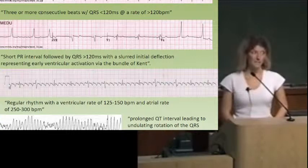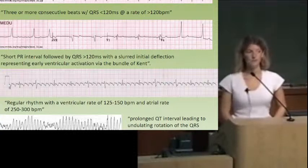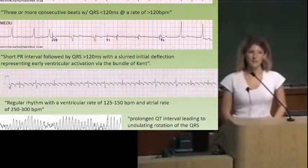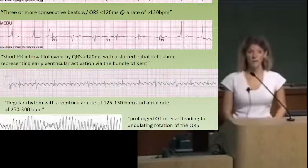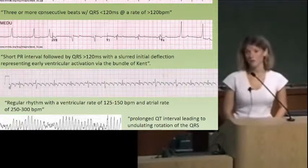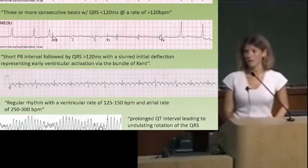Even more importantly, what medications are contraindicated in WPW? Anything that slows AV conduction. Beta blockers are contraindicated. Digoxin is contraindicated. The calcium channel blockers that affect the AV node — verapamil and diltiazem — are contraindicated. Because any time we slow conduction through the AV node, that allows more signal through the bundle of Kent and worsens the arrhythmia.